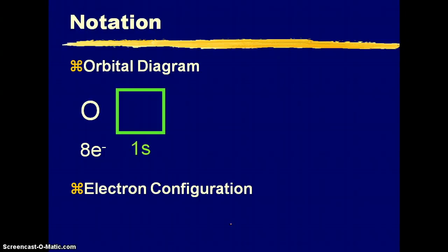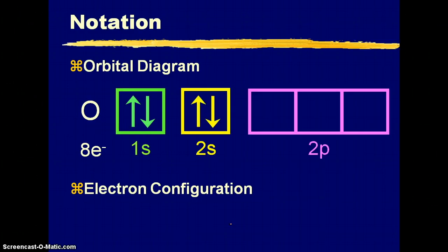So we draw a 1s box, one up, one down, and then we have a 2s box, one up, one down, and then we have a 2p box. Now remember in the 2p, you go one up, one up, one up, before anybody gets a pair.